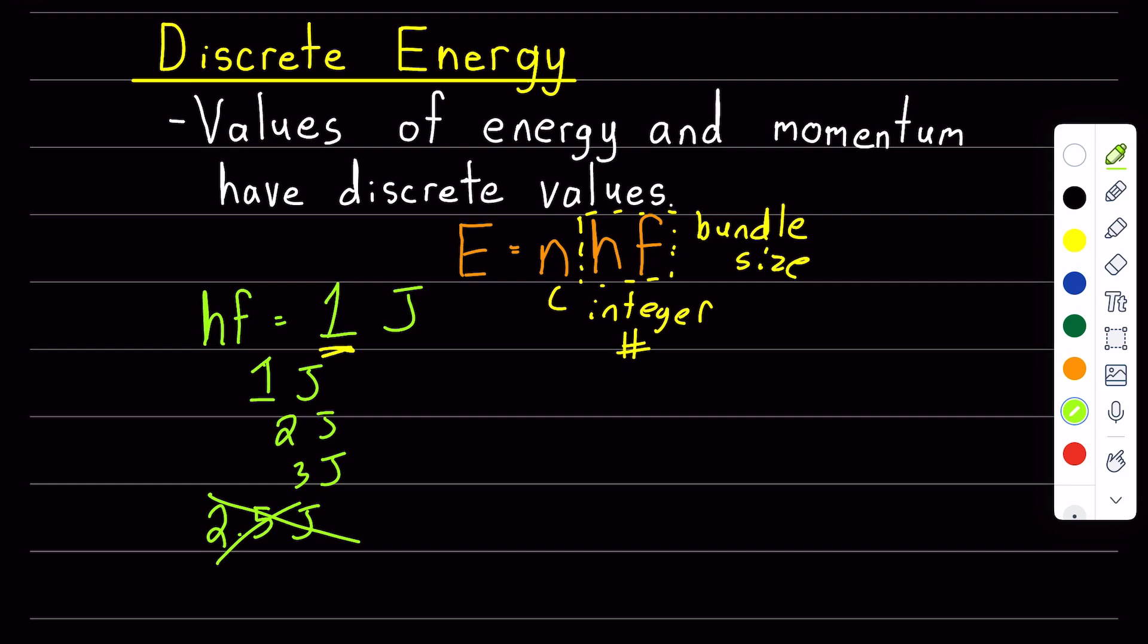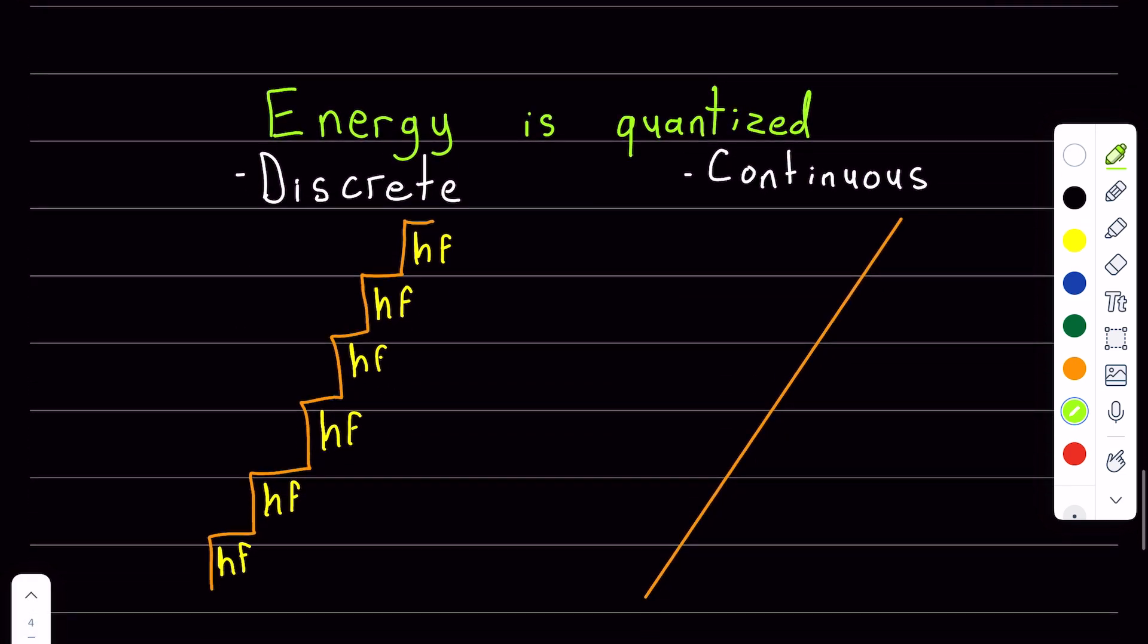In this way, energy is discrete, meaning that there's only certain allowable amounts of energy. This is opposed to energy being continuous, as thought in classical physics.